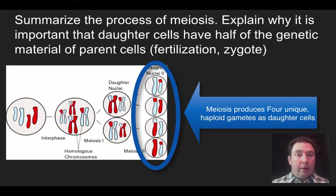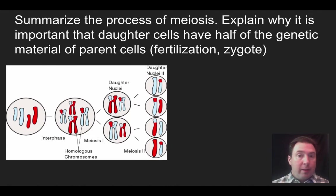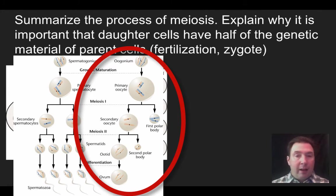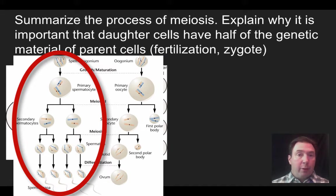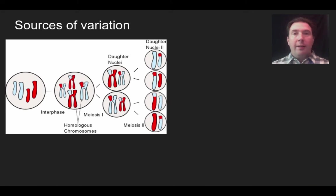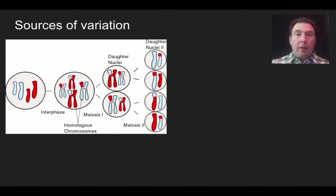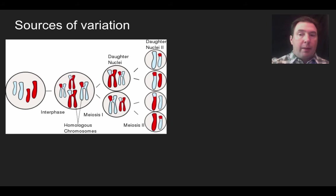In female human reproduction, the division is not even — we end up with one large egg cell and some polar bodies. In males, this process produces four sperm. Now let's talk about the concept of variation. When it comes to what occurs during meiosis specifically, there are three major sources of variation we're going to discuss.